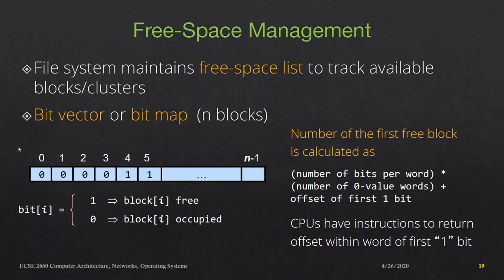By having a simple bit sequence we can keep track of which blocks are free versus occupied. In the diagram shown, the 0th, 1st, and 2nd blocks are occupied. The first free block is block number 4, which is the fifth block. The number of bits in the bit vector equals the number of blocks in memory.